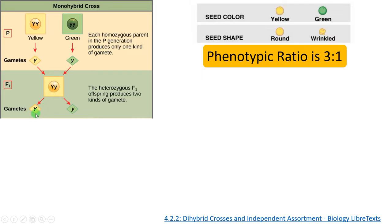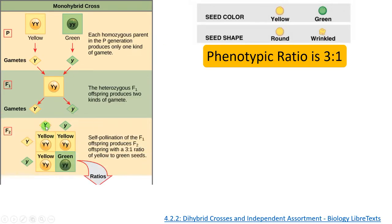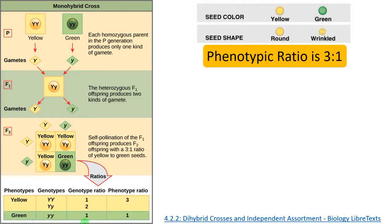During gamete formation, the alleles segregate and each gamete is pure for an allele — each gamete can have only one allele. A gamete having both capital Y and small y together is an impossibility. In the F2 generation, selfing the F1 (capital Y small y) gives capital Y capital Y, capital Y small y, and small y small y — a 3:1 phenotypic ratio and a 1:2:1 genotypic ratio — suggesting that one character is dominant over the other. The character expressed in F1 is dominant and the character masked in F1 but reappearing in F2 is recessive. Here yellow is dominant and green is recessive.